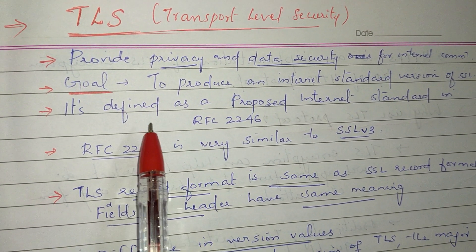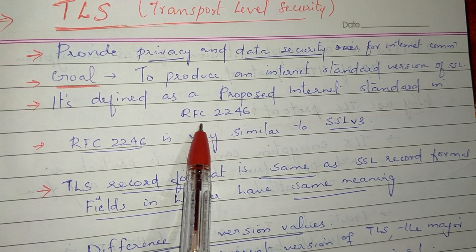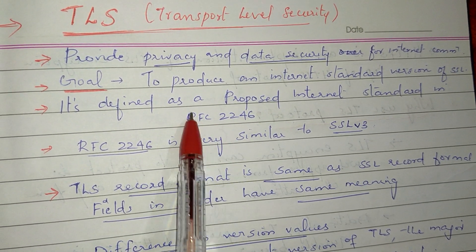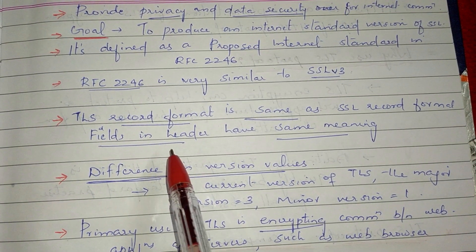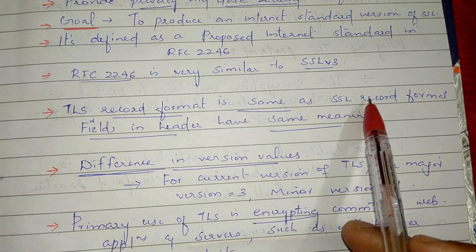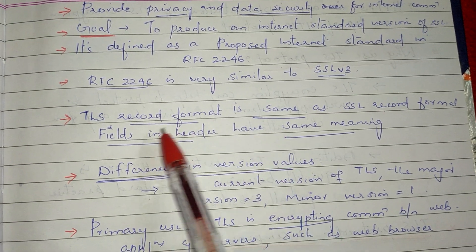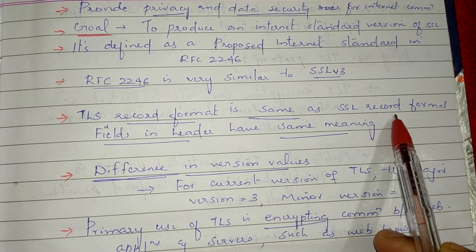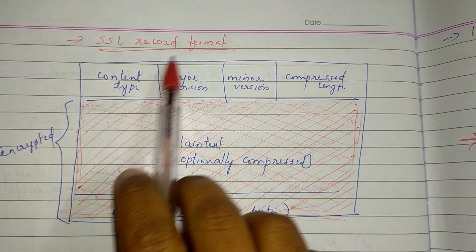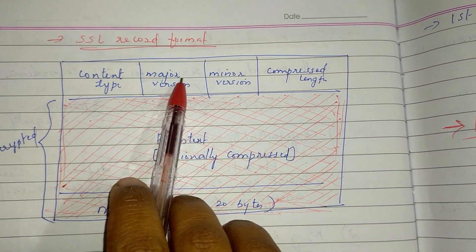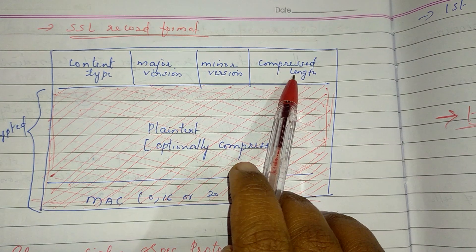SSL version 3 is similar to RFC 2246. We will learn the SSL record format. In TLS, we use the same record format. The header contains: content type, major version, minor version, and compressed length.